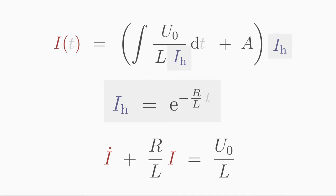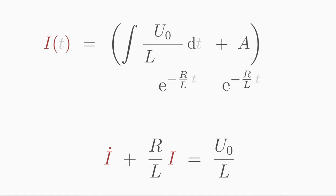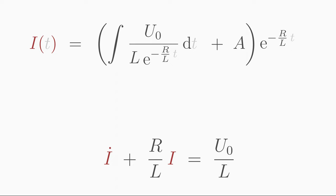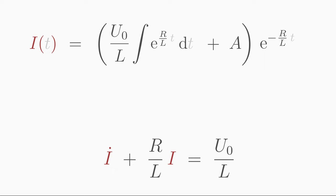Let's insert it into the inhomogeneous solution formula. Note that 1 over the exponential function containing a minus in the exponent is simply equivalent to the exponential function without the minus sign. Now we have to calculate the integral. U0 over L is a constant and can be placed in front of the integral.